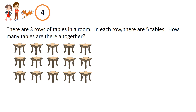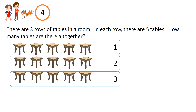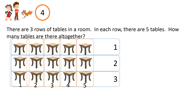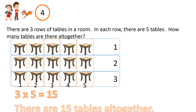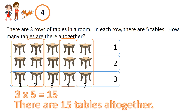Question 4. There are three rows of Tables in a room. In each row, there are five Tables. How many Tables are there all together? Three groups of five. Three times five equals fifteen. There are fifteen Tables all together.